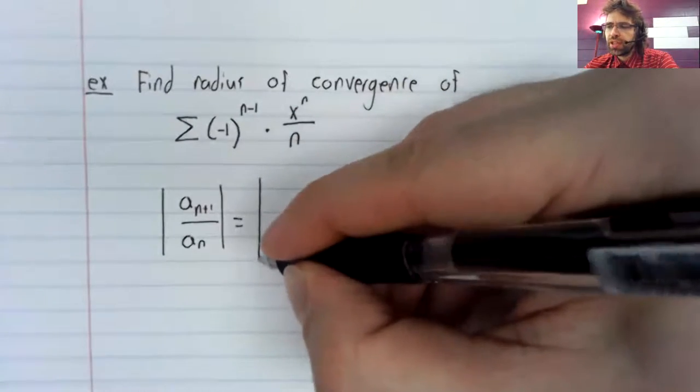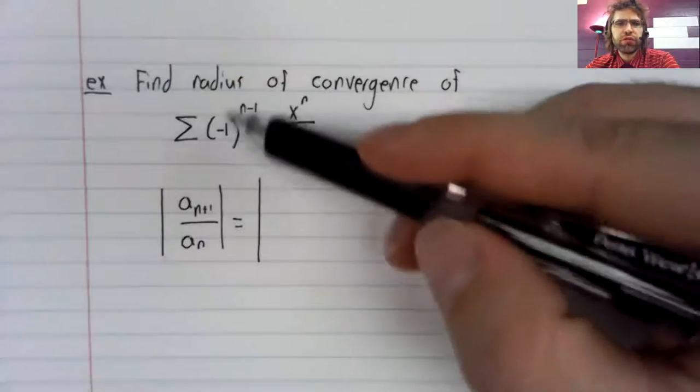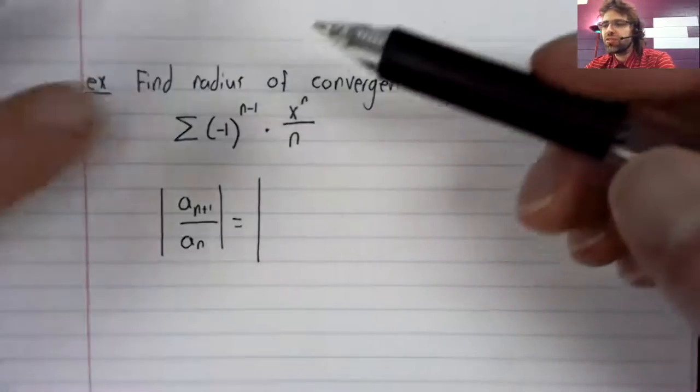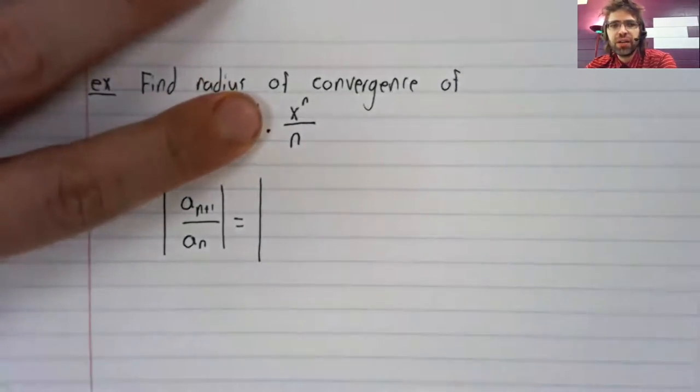The absolute value is going to get rid of this negative one to the n minus one term entirely.